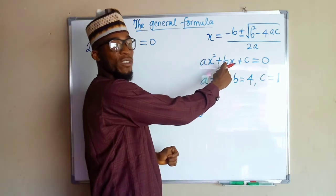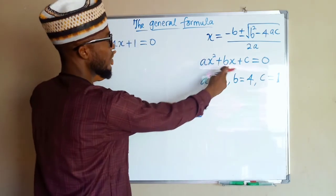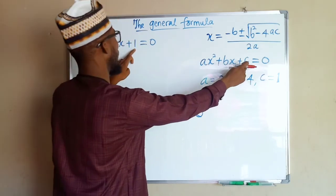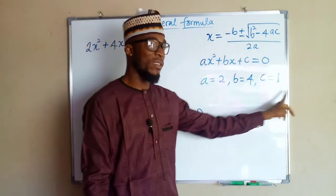The coefficient of the middle term, which is x, is 4 here. So we have b equal to 4. The constant is c. We have c equal to 1.